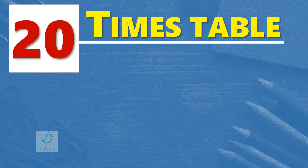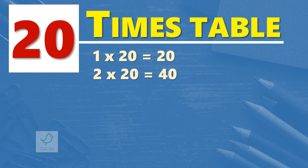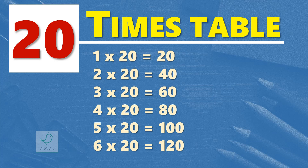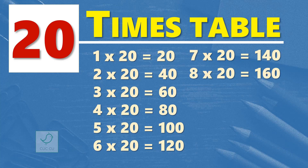20 times table. 1 times 20 is 20. 2 times 20 are 40. 3 times 20 are 60. 4 times 20 are 80. 5 times 20 are 100. 6 times 20 are 120. 7 times 20 are 140. 8 times 20 are 160.